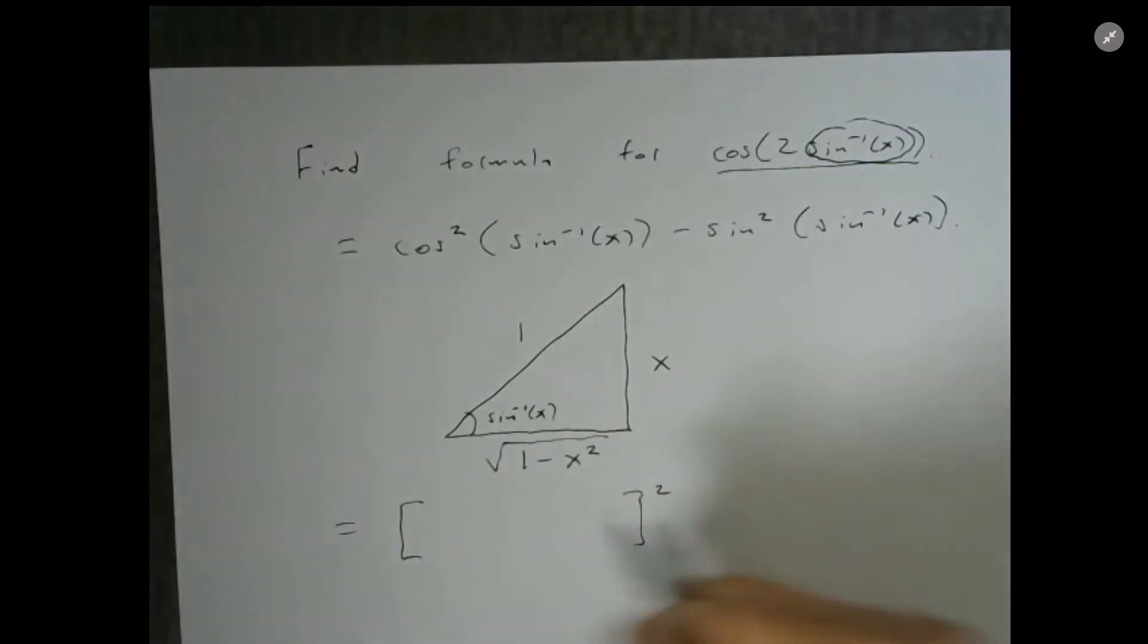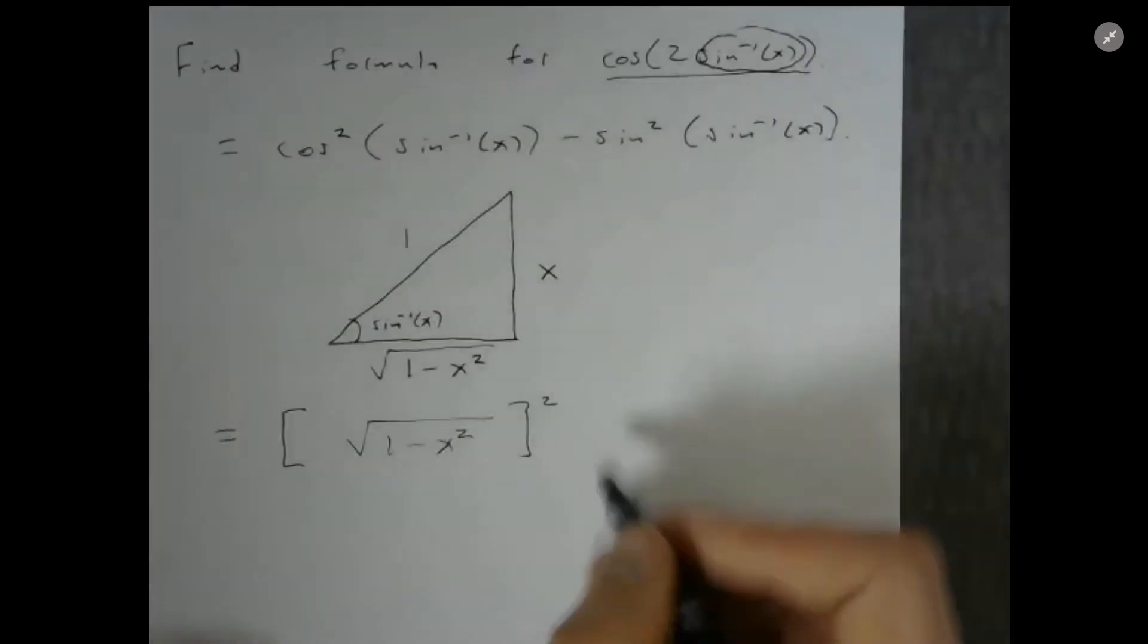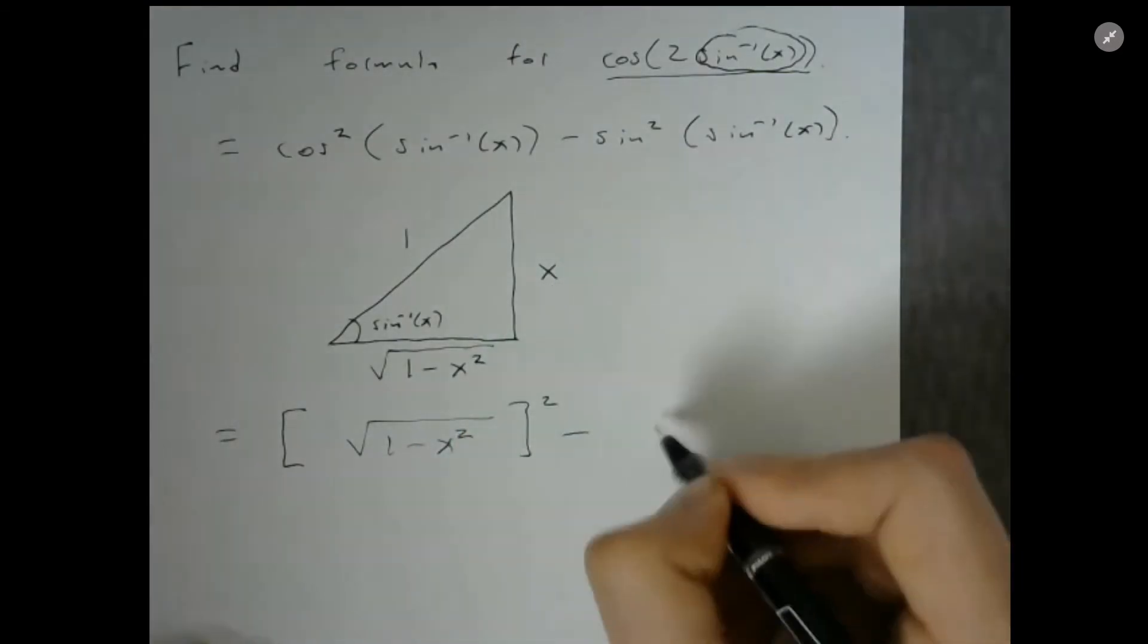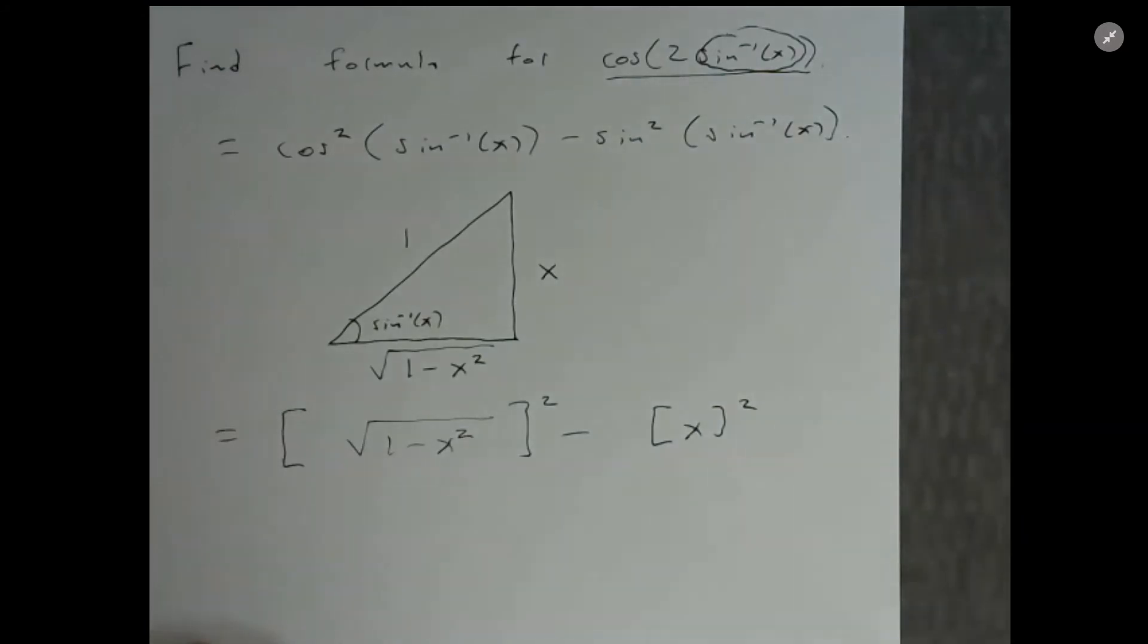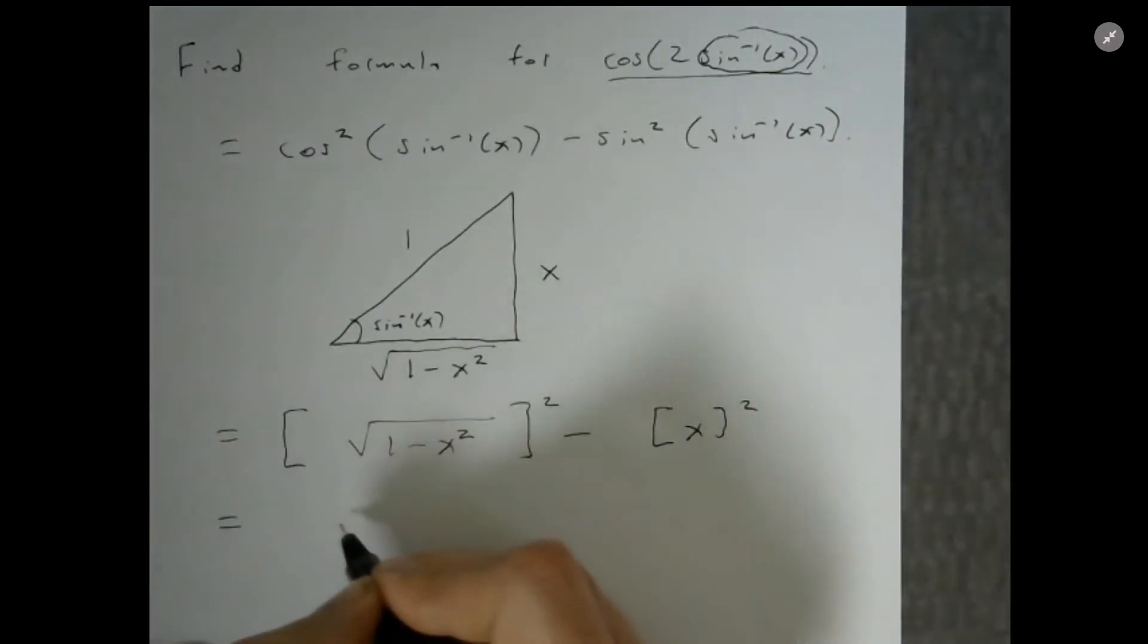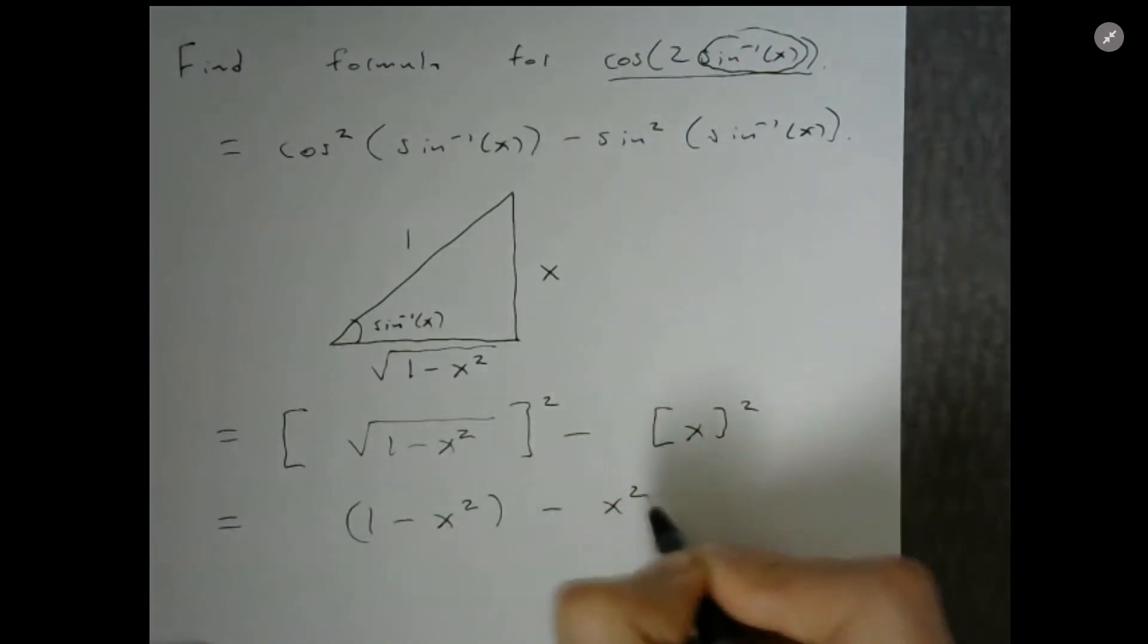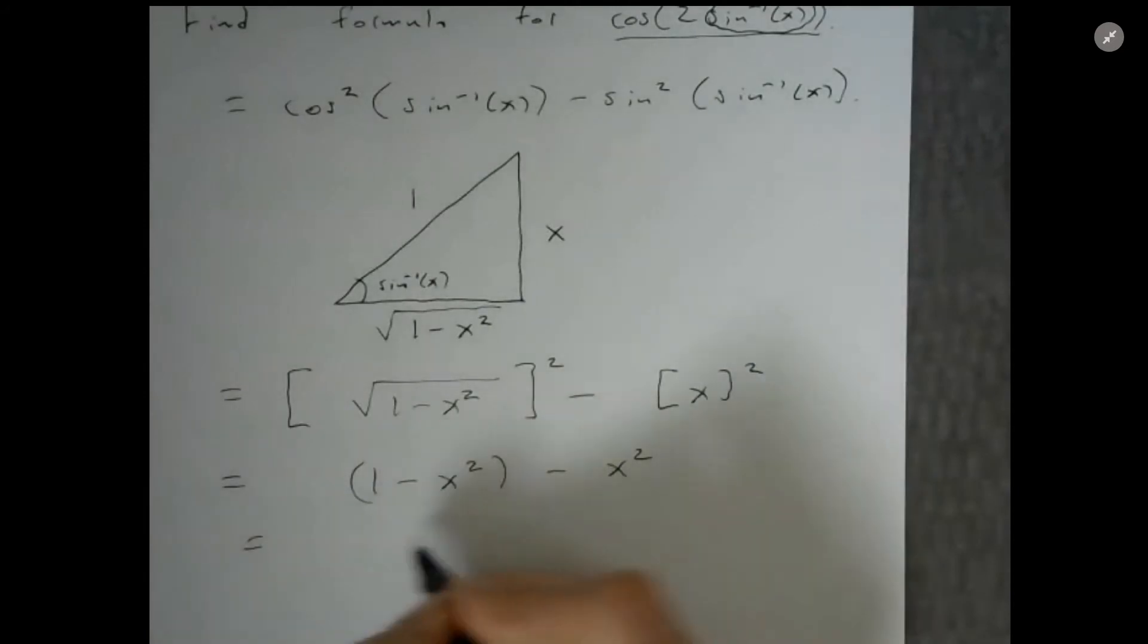So the cosine which I'm going to square is the square root of one minus x squared, and the sine is x, so I'm going to subtract x squared from this. What I end up with is actually a polynomial: one minus x squared minus x squared, and that's equal to one minus two x squared.